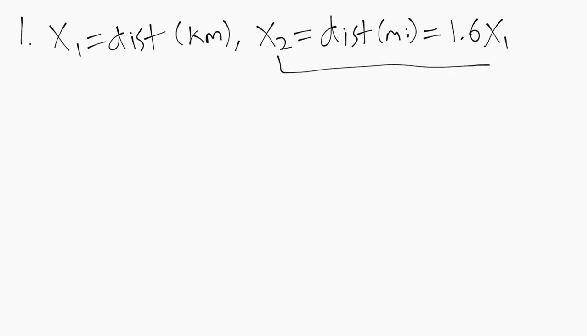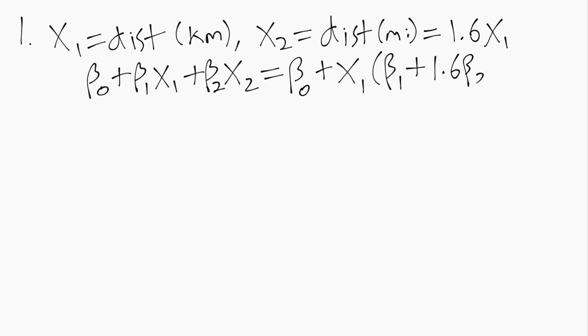Because x2 is a linear combination of x1, in other words it's just some constant times x1. And we could think about if we tried to write out a model with both x1 and x2, well we can plug in for x2 because it's just 1.6 times x1, so then we'll just end up having a single regressor whose slope is beta 1 plus 1.6 beta 2.